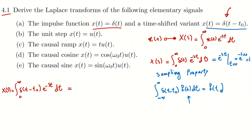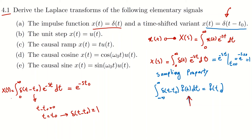From the sampling property, we know this equals e to the power of minus s times t₀, because that's where t minus t₀ equals 0, meaning t equals t₀, and under this condition delta(t) would be 1. So we can say the Laplace transform of delta(t minus t₀) is e to the power of minus s times t₀.